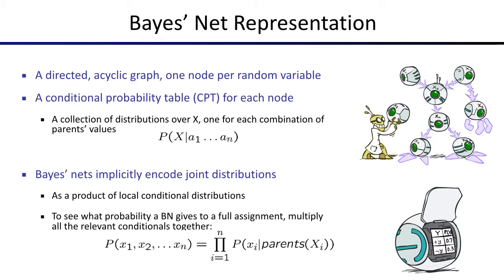A quick refresher: a Bayes Net is defined by two things. First, a directed acyclic graph with one node for every random variable in the domain you're trying to model. Second, for every node, a conditional probability table corresponding to the probability of that node taking on a particular value for fixed values of all its parents. We can use Bayes Nets to provide an implicit encoding of the joint distribution, which is more compact than writing down the full table.